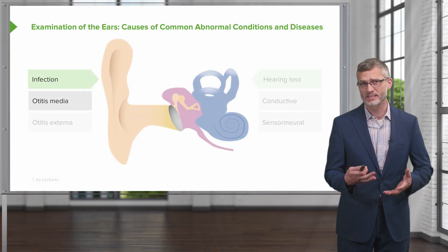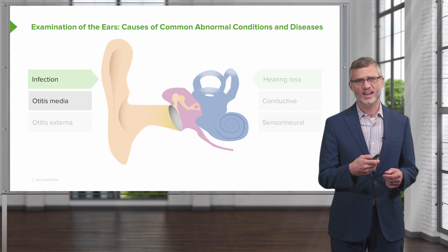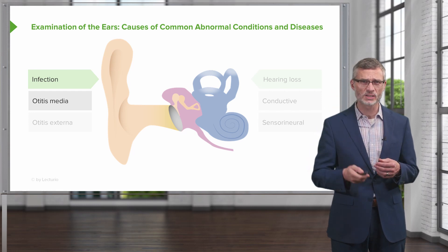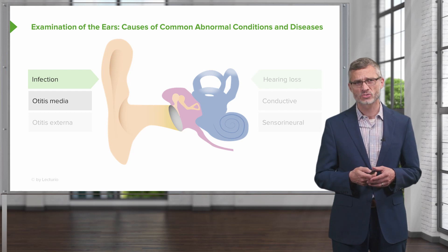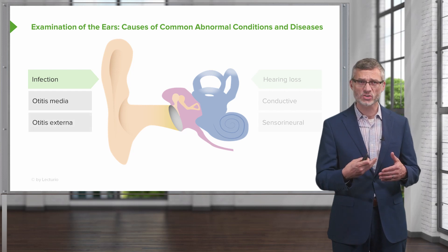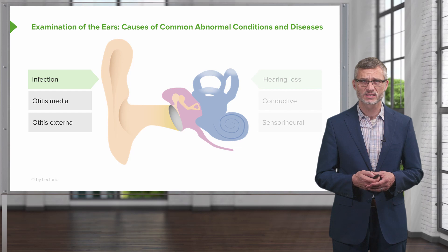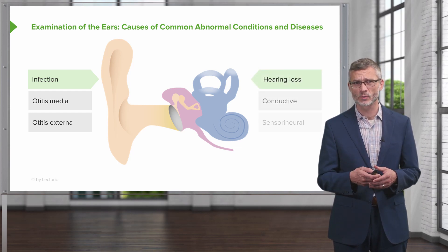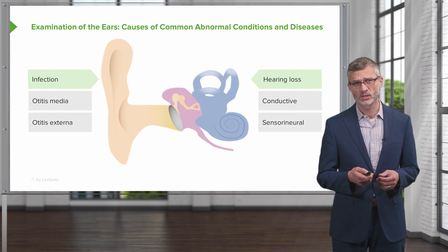We're also going to be talking about different types of ear infections, starting with otitis media involving problems with the middle ear, and comparing and contrasting that with patients who have an external ear infection of the external acoustic meatus. We're going to look for exam findings that help us distinguish between conductive hearing loss and sensorineural hearing loss.